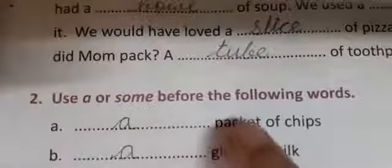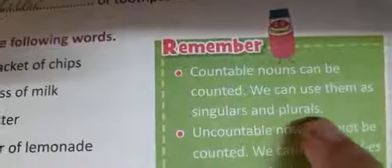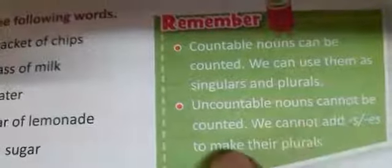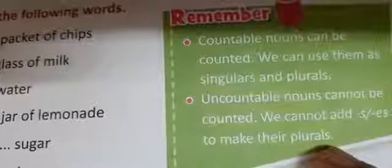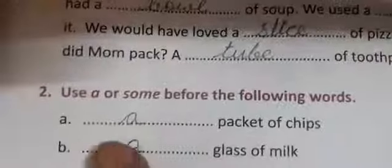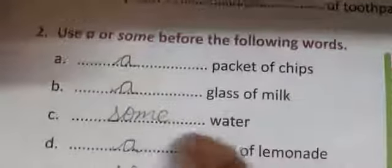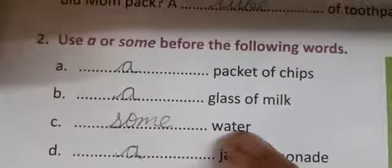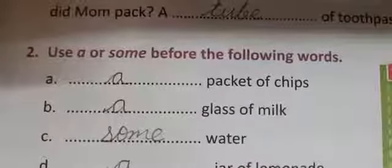Now, use 'a' or 'some' before the following words. Remember, countable nouns can be counted. We can use them as singulars and plurals. Uncountable nouns cannot be counted. We cannot add s or es to make their plurals — we have learned these things in our previous class also. A packet of chips, a glass of milk, some water — water is an uncountable noun. A jar of lemonade, some sugar, some butter — these are uncountable nouns. We use 'some' before uncountable nouns but before countable nouns we use 'a'.